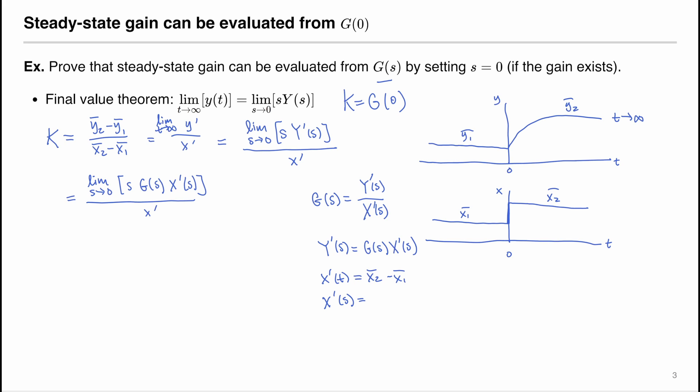We have, because this is constant, the Laplace transform of a constant is constant divided by s. And substitute that in. And then we have s, G(s).